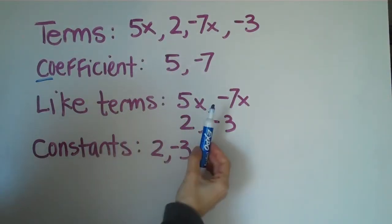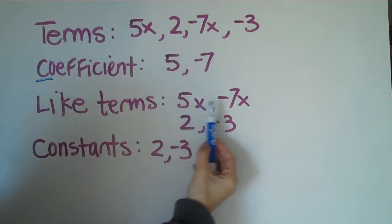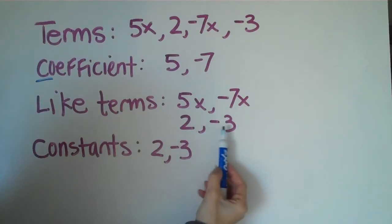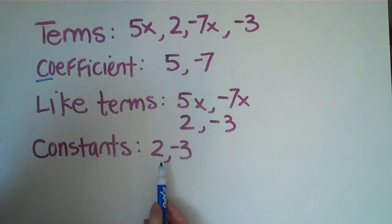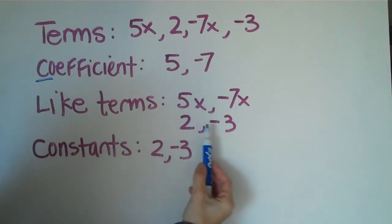Like terms would be anything that you can end up combining, and we'll talk about that a little later. 5x and negative 7x, they have the same last name. They have the same variable. They are like terms. 2 and 3, these are both what is known as constants. They are able to be combined. Whenever you can combine terms, they are like terms.